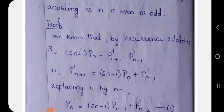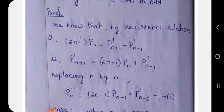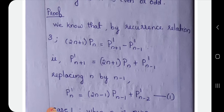Applying the recurrence relation: Pn' of x equals Pn+1 dash equals (2n+1) Pn-1 dash. This gives us (2n-1) Pn-1 dash minus Pn-2 dash. That is equation number 1.